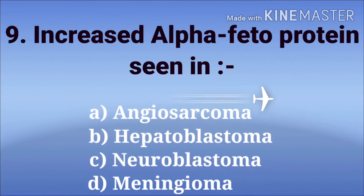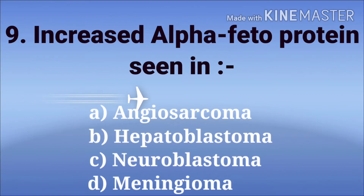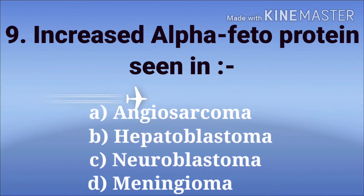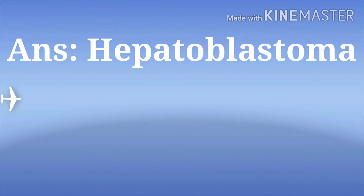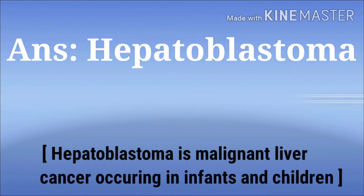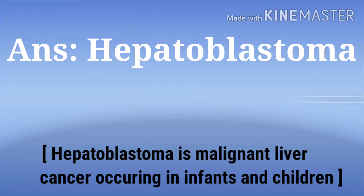Increased alpha-fetoprotein seen in. The options are angiosarcoma, hepatoblastoma, neuroblastoma, and meningioma. The answer is hepatoblastoma. Hepatoblastoma is a malignant liver cancer occurring in infants and children.